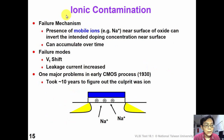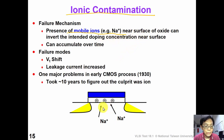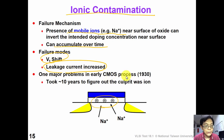The third effect is ionic contamination. The failure mechanism is that mobile ions, such as sodium ions, accumulate near the surface of the oxide at the interface over time, causing VT shift or increased leakage current in the device. This was a big problem in early CMOS process technology.